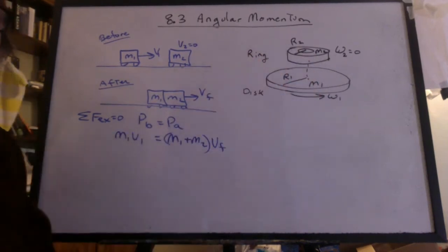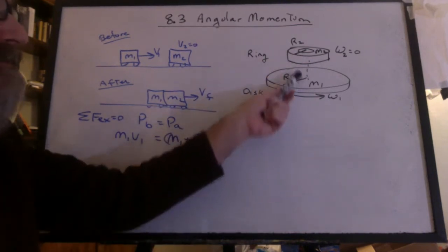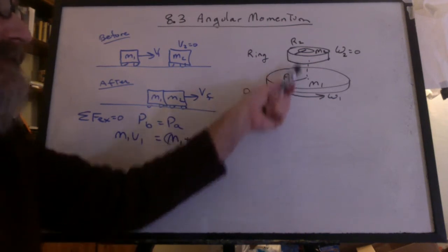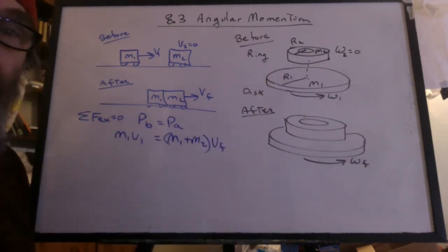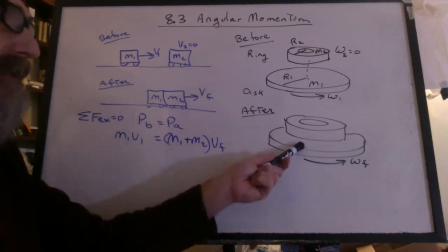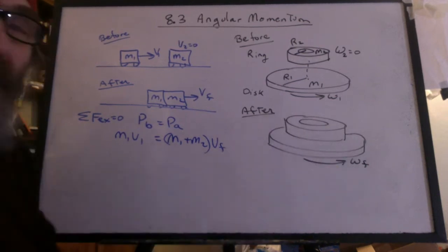Mass 2, and the initial omega is going to be zero. So, I'm going to carefully get this close to the disk and drop it from only like a centimeter above. And there's going to be a collision. The before picture turns into the after picture with the ring sitting on top of the disk. And it's all rotating at an angular velocity final.